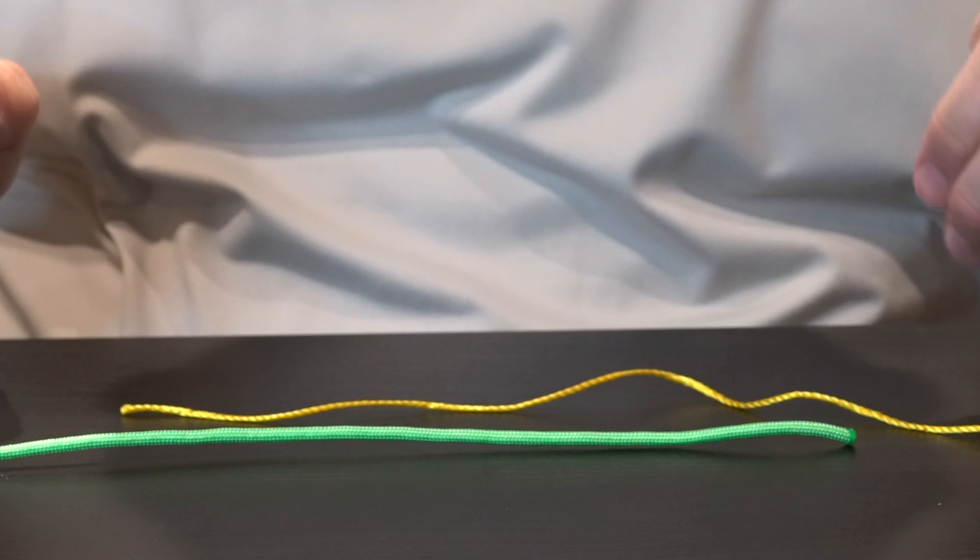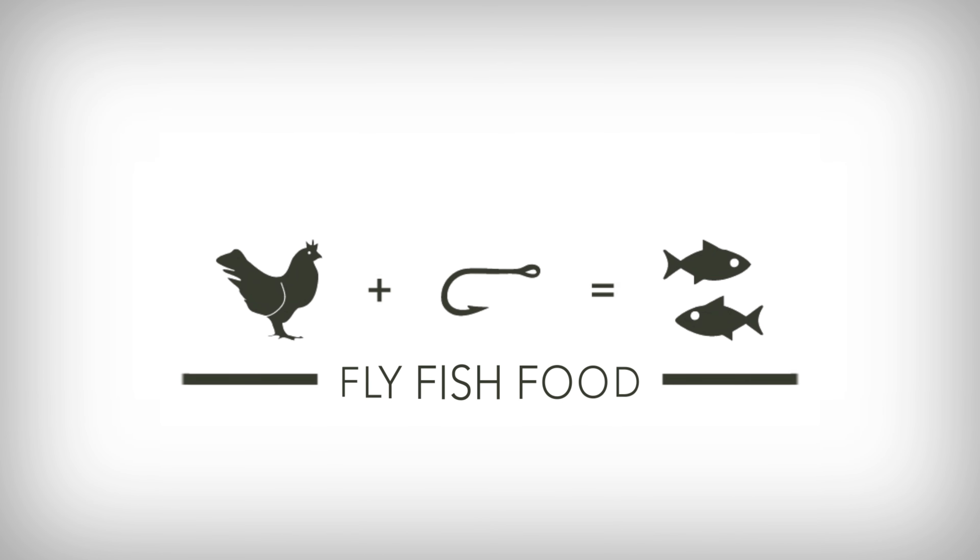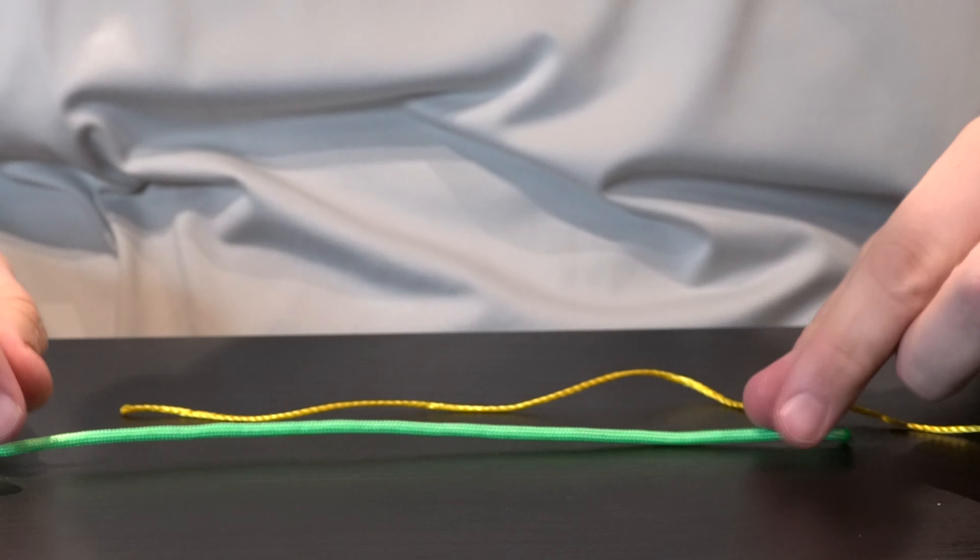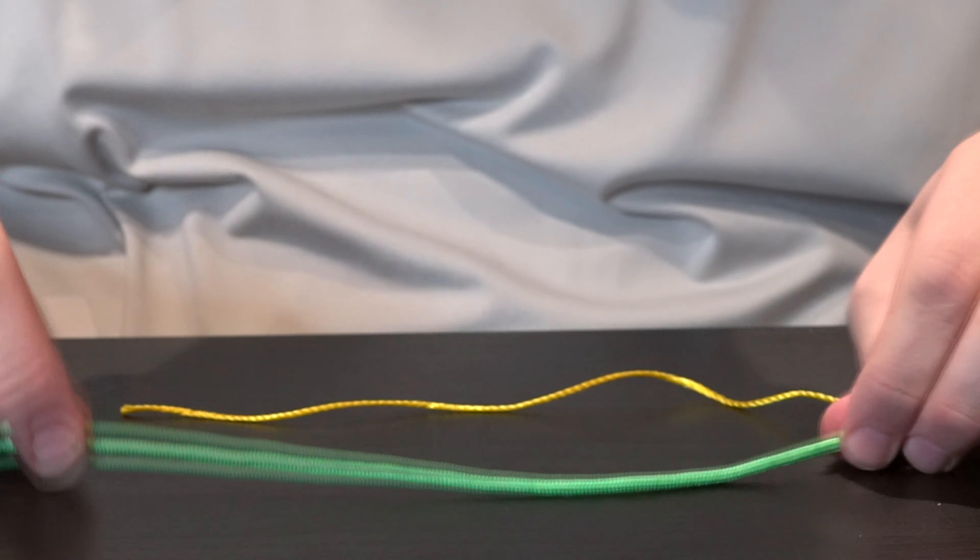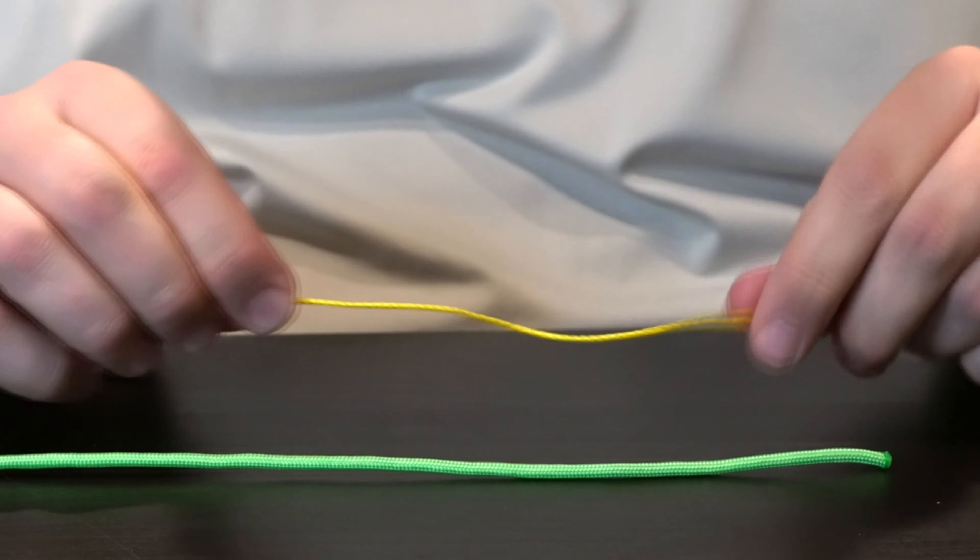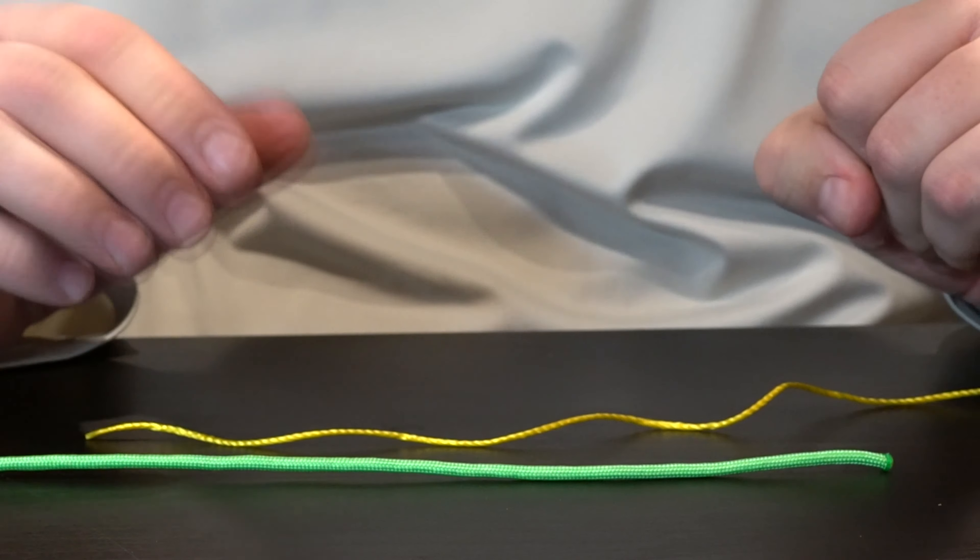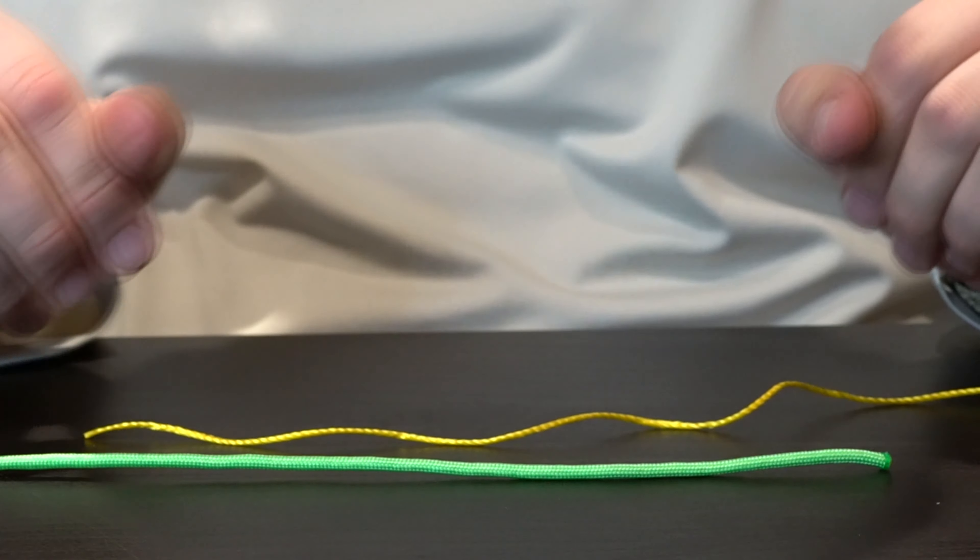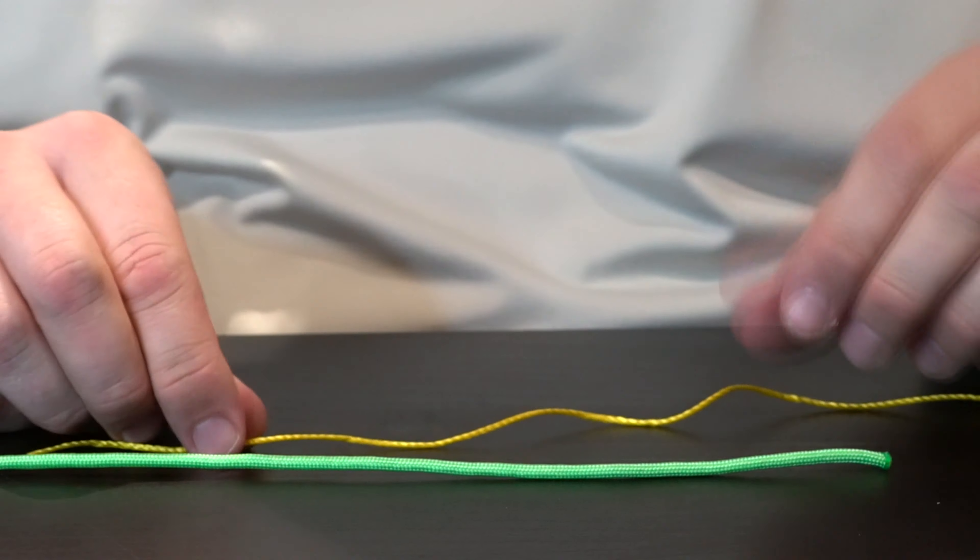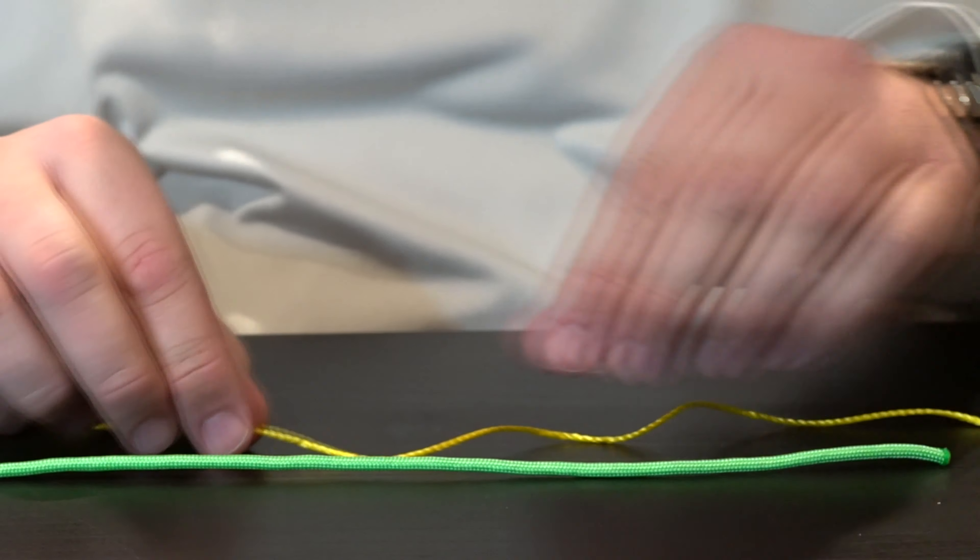Alright, we're gonna tie a double uni knot. This is a super useful knot if you're going from a very thick line to a very thin line, or if you're going from braid to fluorocarbon or braid to nylon. It's a simple knot to tie and it's super strong.